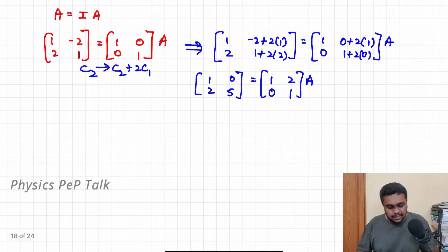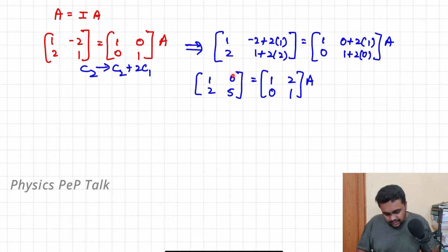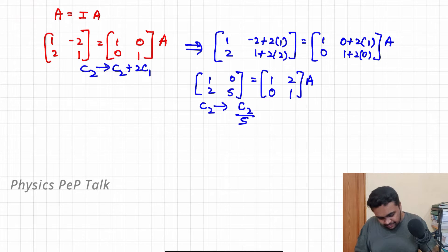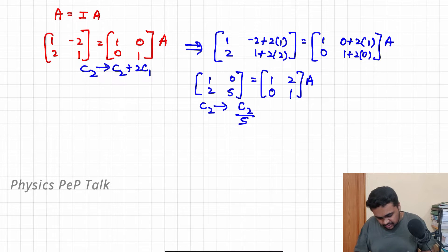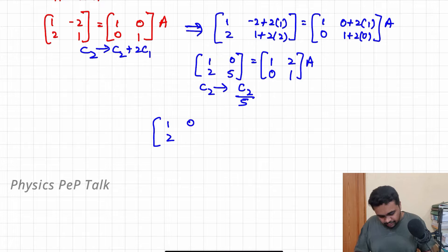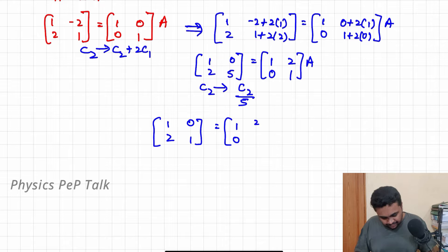Now I will start the second step: I will make this element equal to 1. I will transform column 2 as C2 divided by 5. So 0 by 5 is 0, and 5 by 5 becomes 1. LHS will be equal to [1, 2; 0, 1]. Similarly, RHS is [0, 2/5; 0, 1/5] into A.